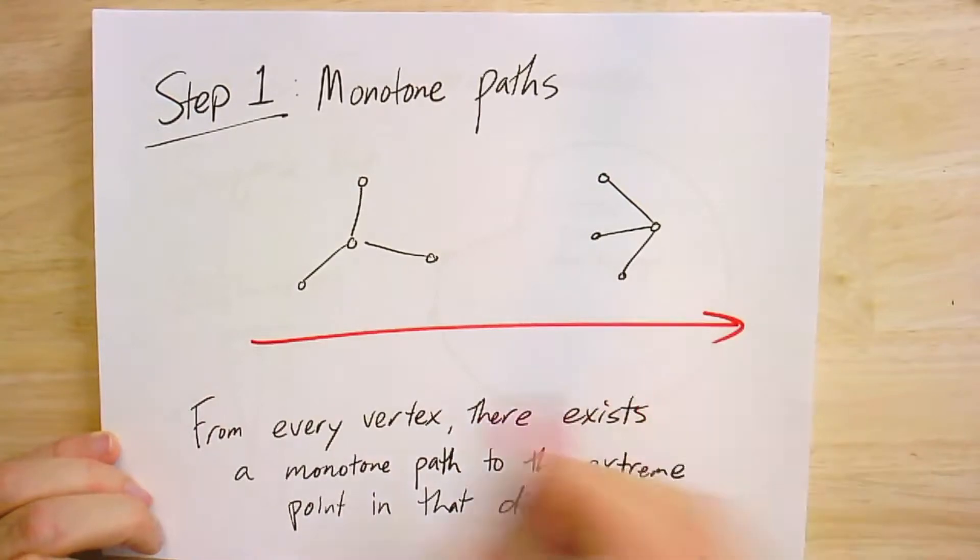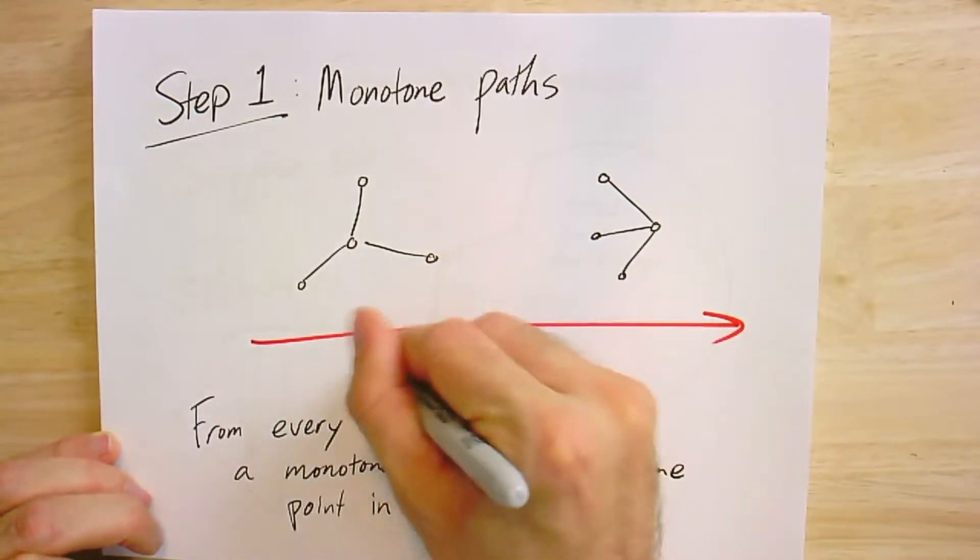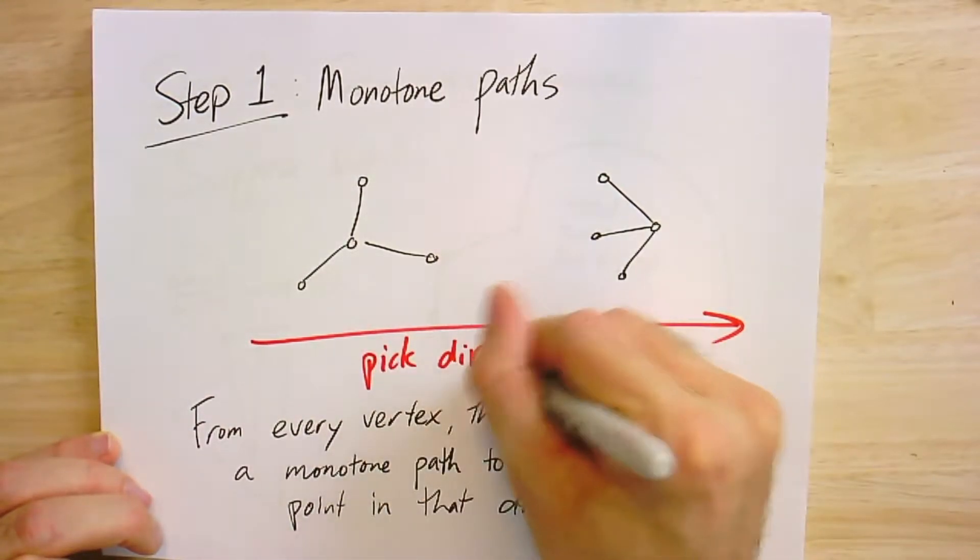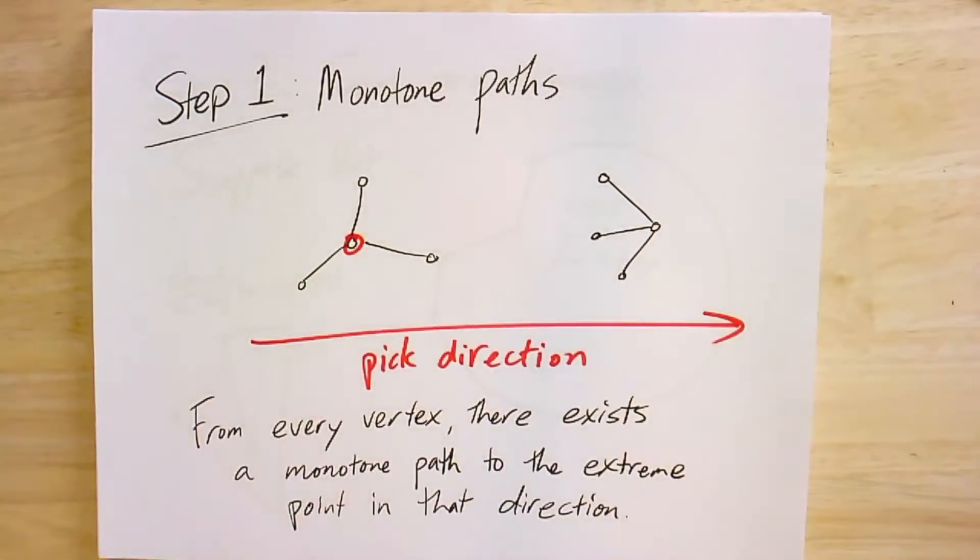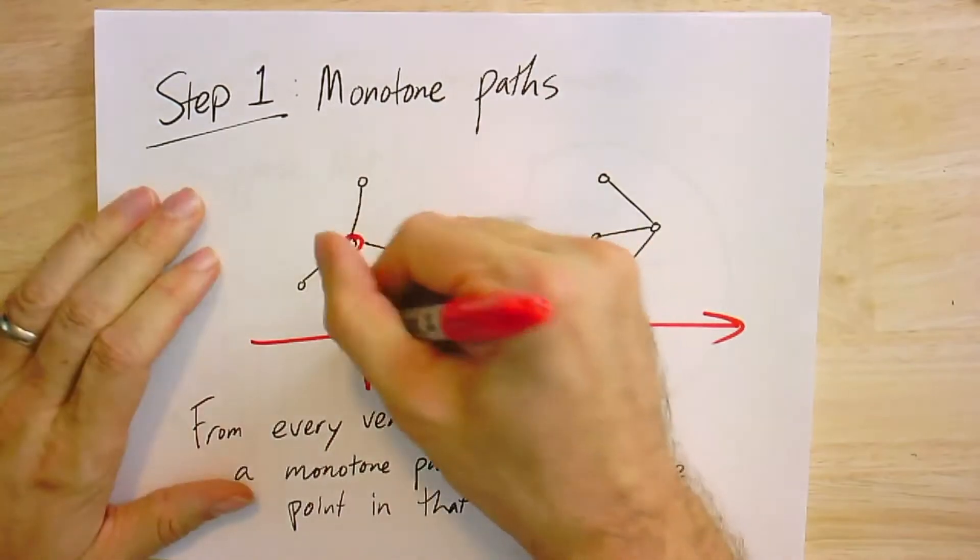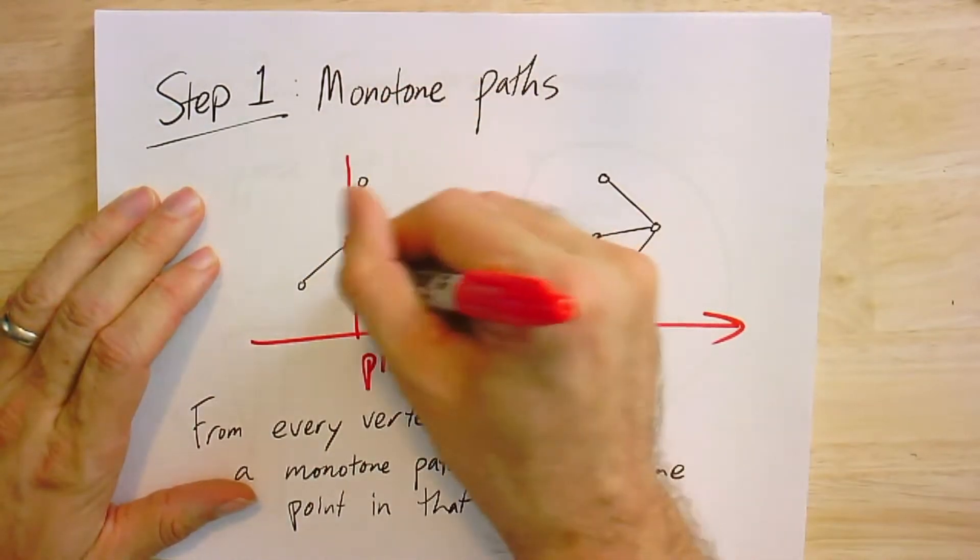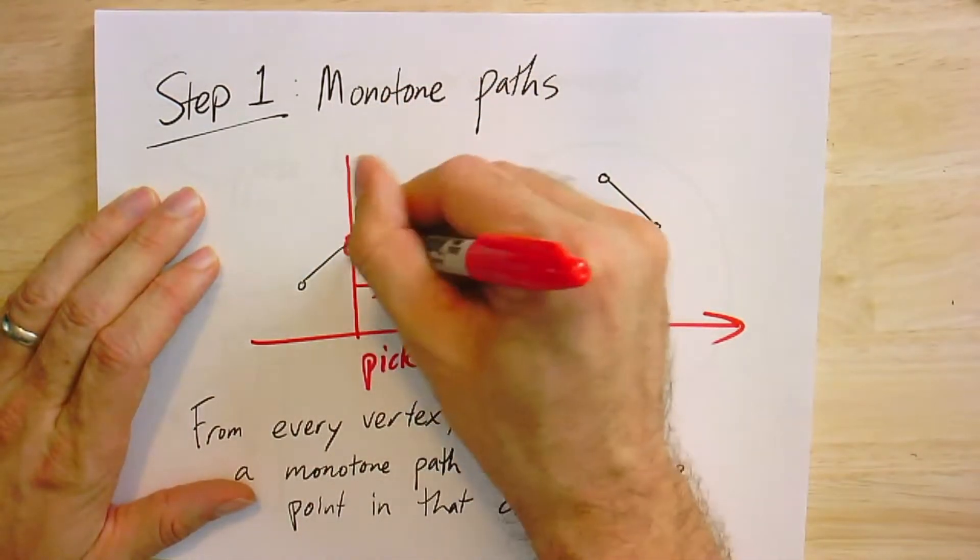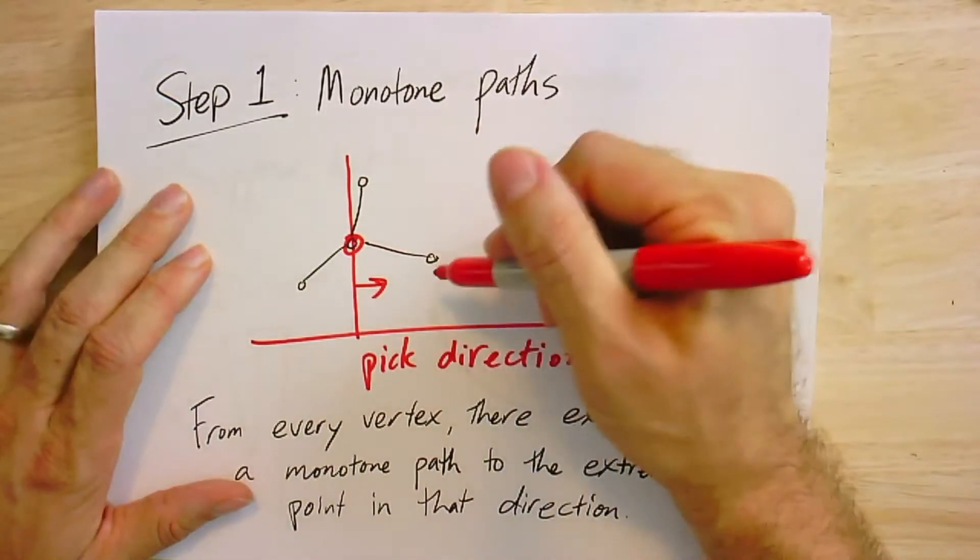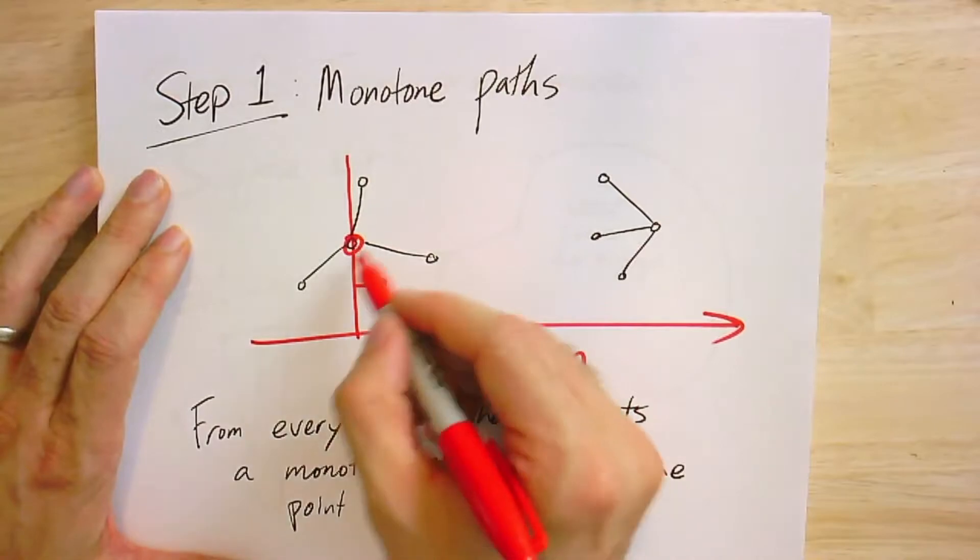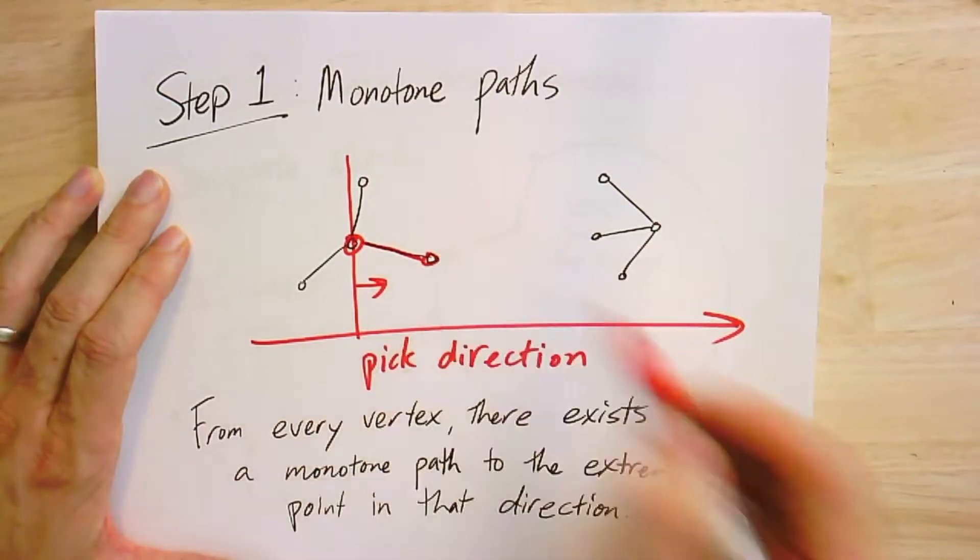Let's say I pick a direction. It doesn't matter what direction I pick. Then whatever vertex I pick, if I go orthogonal to that direction, there's always some edges that will get me more in that direction. It might just be one edge, but there's at least one edge like this. It can't be that all edges coming out are in this direction because the net force would pull it in.